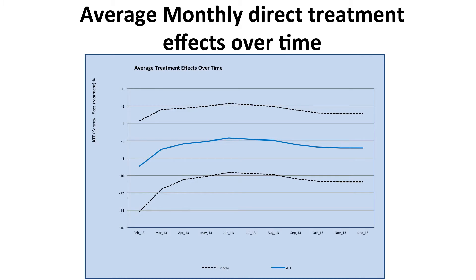The research team found that the provision of social norms information decreased water use in the treatment households by about five to six percent during the first year following the intervention. There was also a statistically significant but short-term spillover effect. This figure shows the average direct monthly treatment effects over the 12 months of the experiment for the targeted households with working meters. The dashed lines show the 95 percent confidence levels.